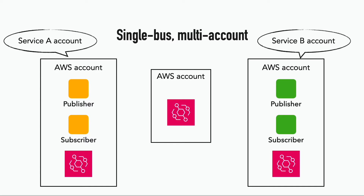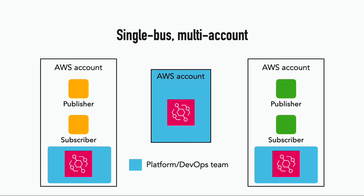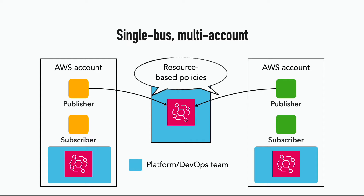In the single-bus multi-account pattern, you can have separate accounts for different workloads or services. Let's assume you have one account per service per environment. We have two separate services here, each with its own account, and there's a centralized event bus which resides in its own account. Typically the event buses are created and managed by a platform team or a DevOps team, and the event buses in the workload accounts are created as part of the landing zone in AWS Organizations. The event publishers in the workload account publish events to the central bus directly, thanks to resource-based policies set up against the central event bus.